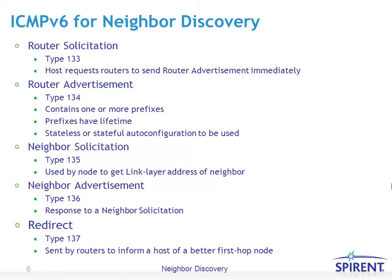The different types of Neighbor Discovery messages: Router Solicitation is type 133, used by hosts to request routers to send an advertisement immediately, as opposed to waiting a minute or two for the next automatic router advertisement. Router Advertisement is type 134; it contains one or more prefixes, has a lifetime, and is used for either stateless or stateful auto-configuration.